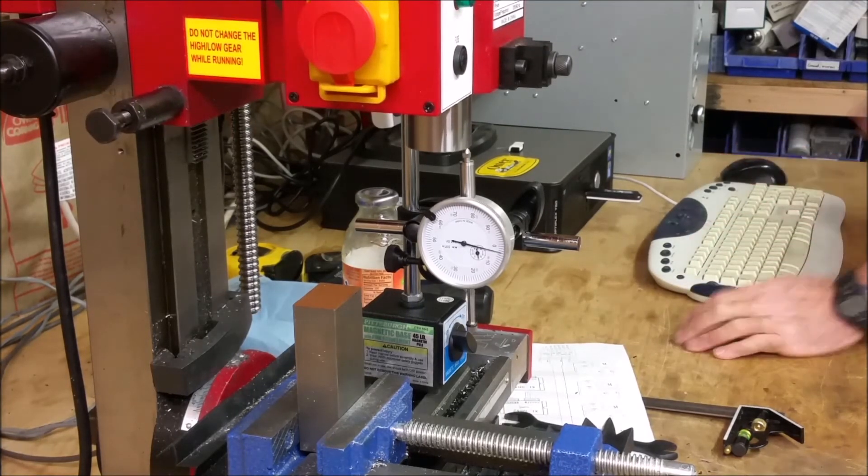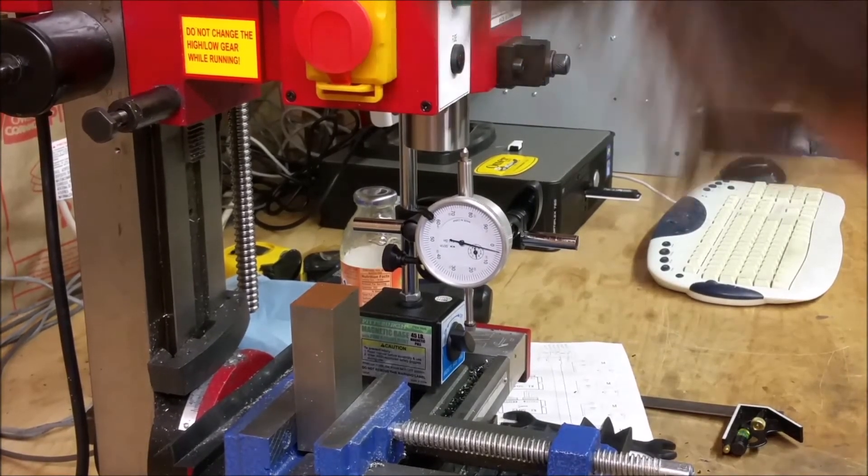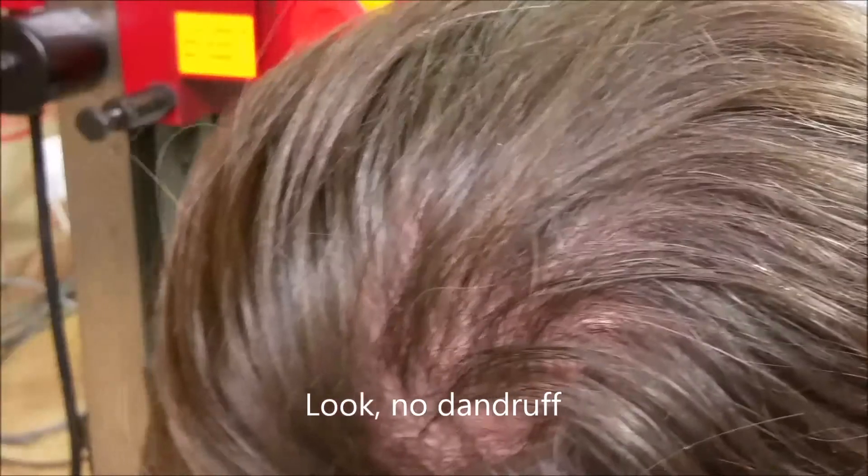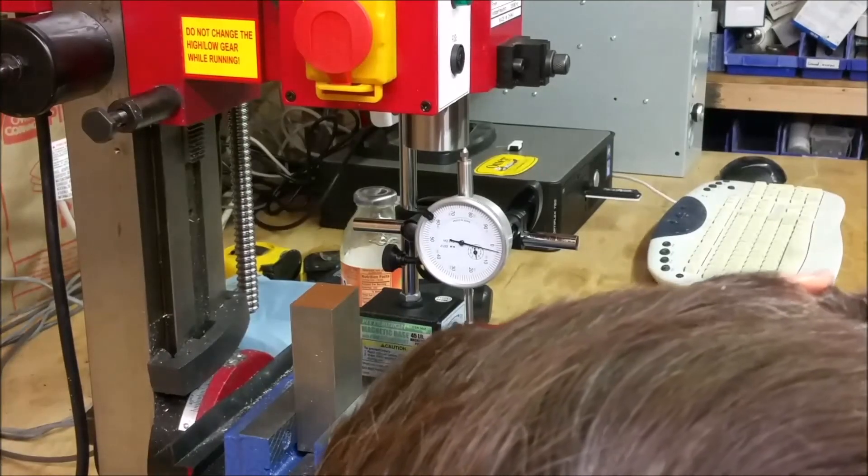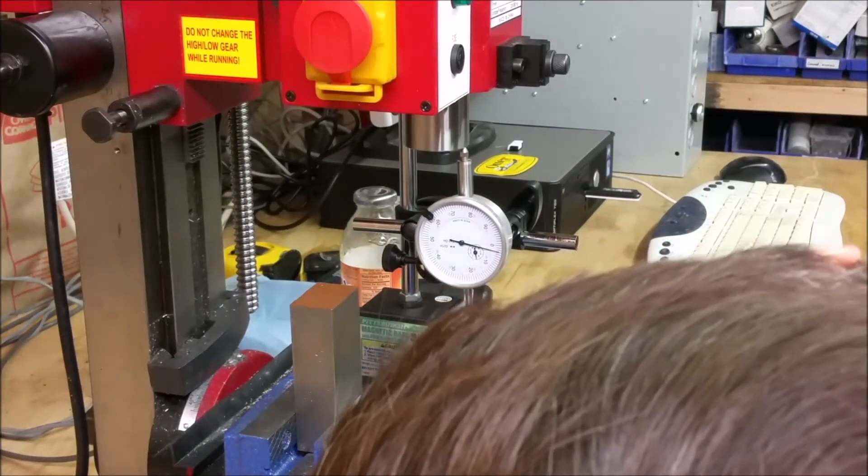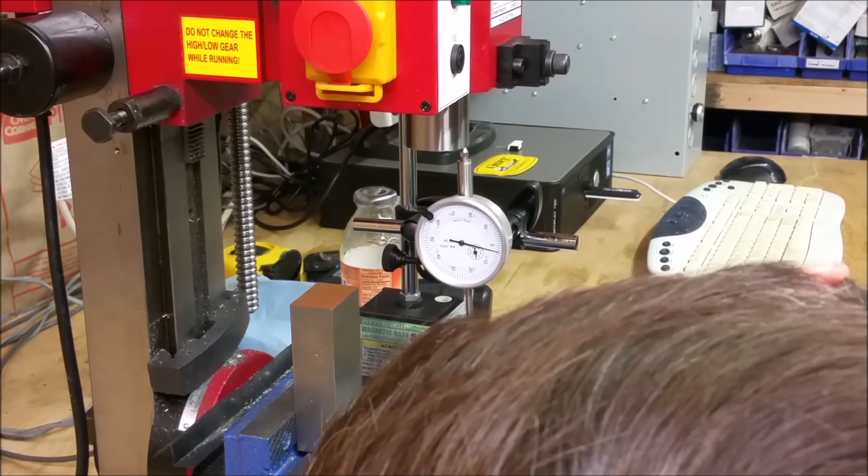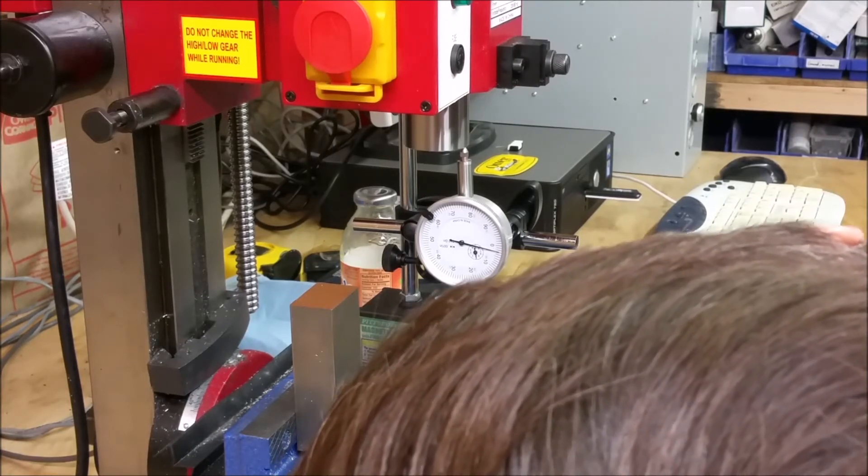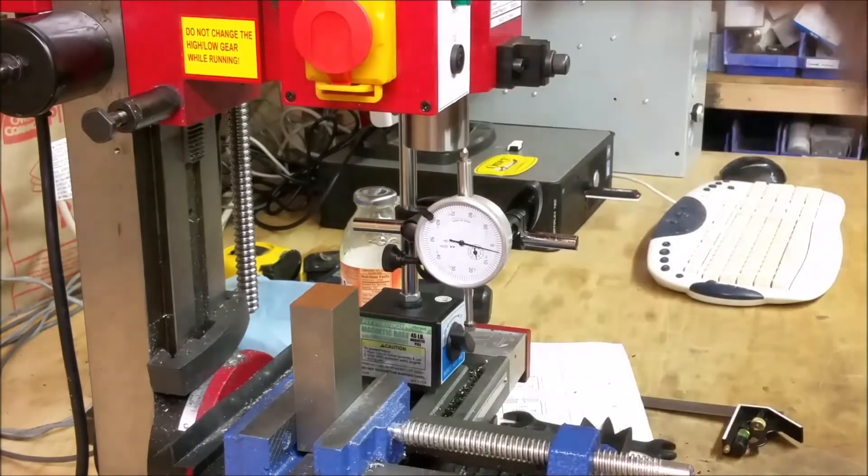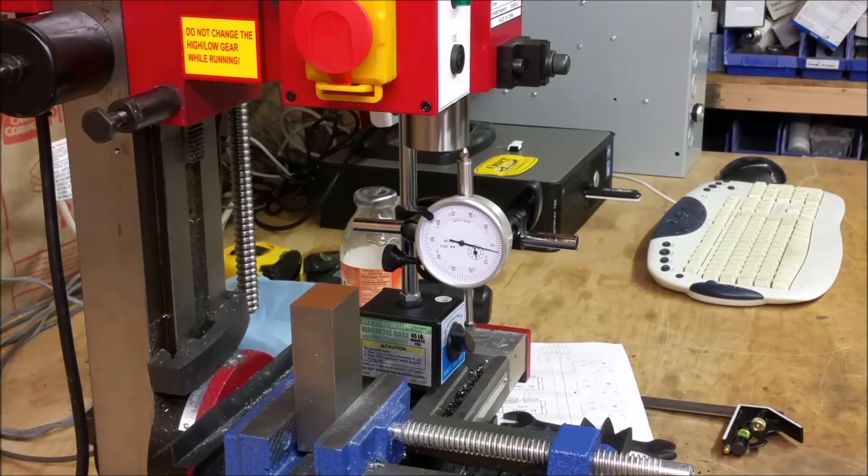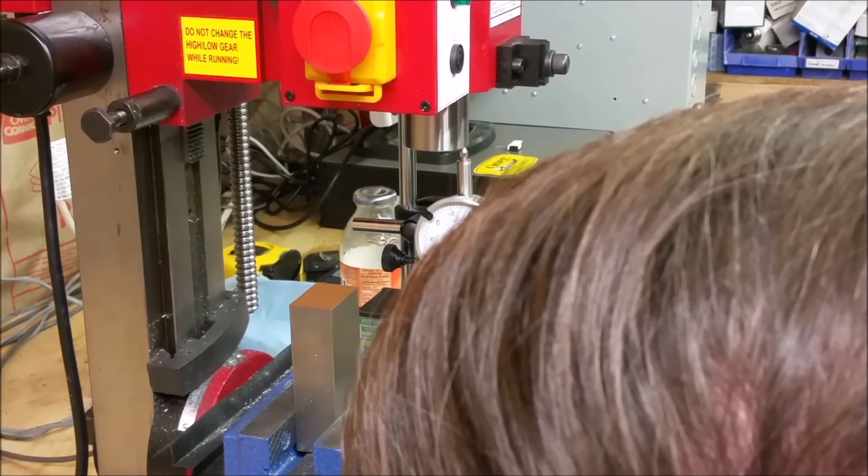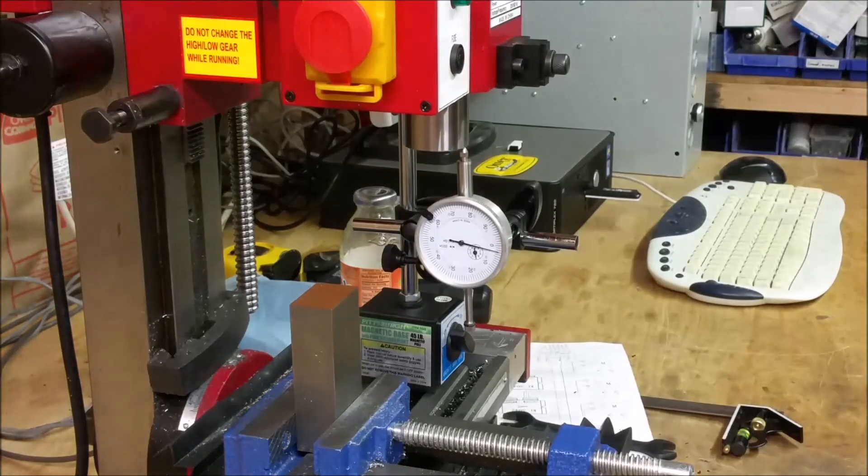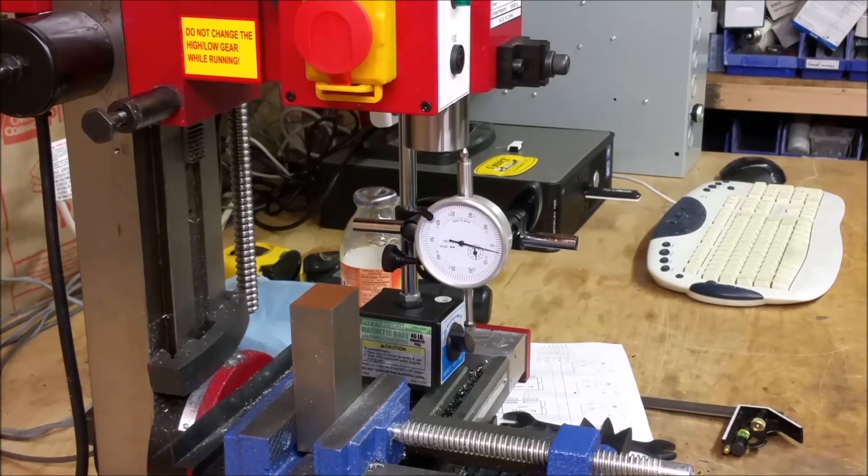And it goes down. Let's see what we're reading here. Looks like we are pretty close. Looks like it's one inch and maybe one, two and nearly three. Maybe two ten thousands. So I'll just enter that as two over, or one inch and two thousands.